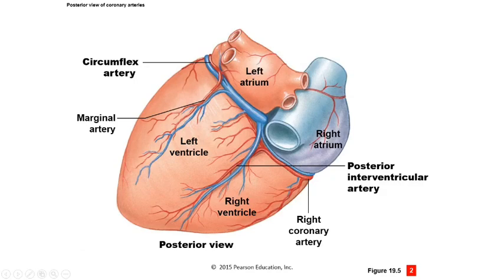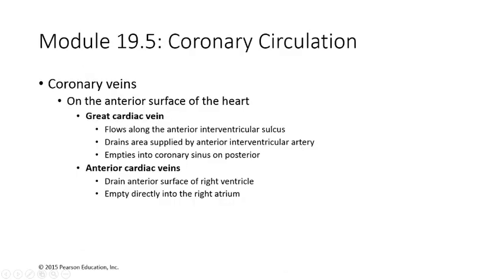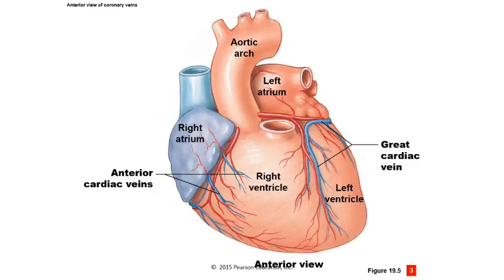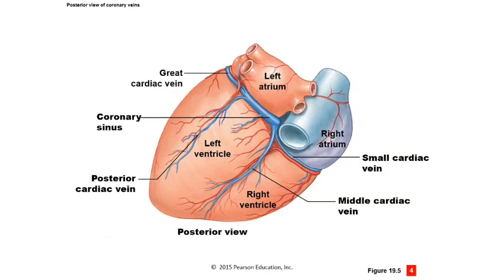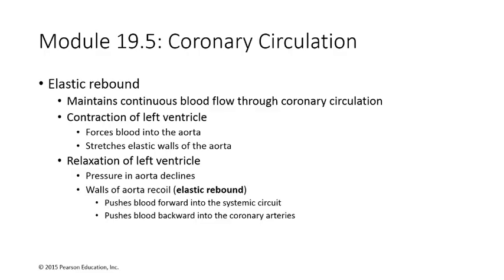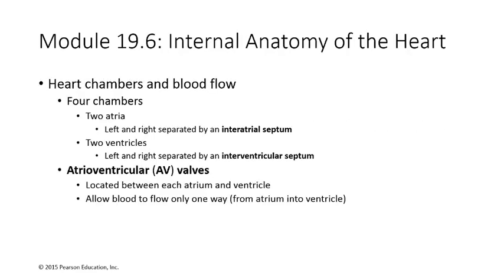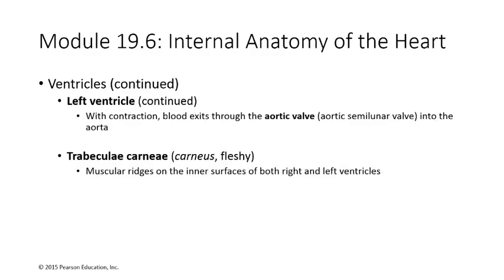You can also see the posterior interventricular artery. The coronary veins — we call them the great cardiac veins — flow along the heart bringing blood back, and eventually all that blood drains into the coronary sinus. Look at that extra information about the specific names of the cardiac veins and coronary arteries. Everything else through here should be very familiar to you.